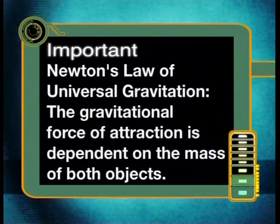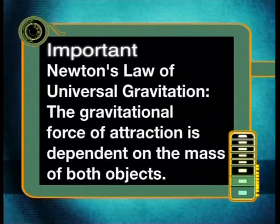Newton's law of universal gravitation states that the gravitational force of attraction is dependent on the mass of both objects. The moon has a much smaller mass than the earth. So on the moon, there will still be a force due to gravity acting on any object, but this force will be smaller on the moon than it is on earth. When the gravitational acceleration is large, like on earth, the force due to gravity is large. But on the moon, where the gravitational acceleration is smaller, the force due to gravity is also smaller. So the weight of objects is smaller too.